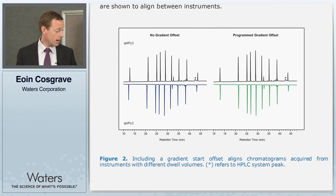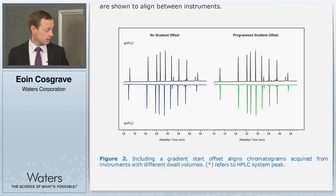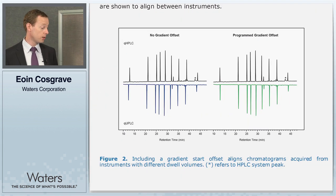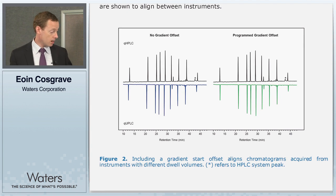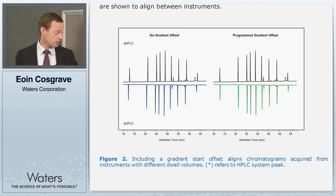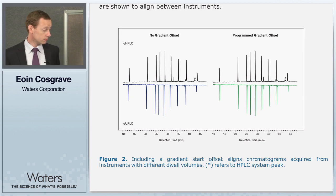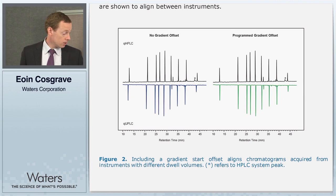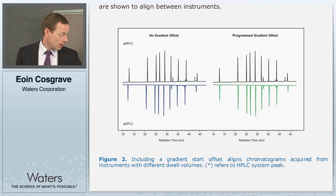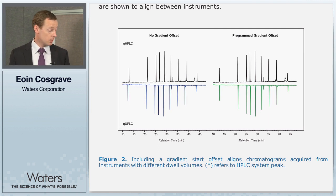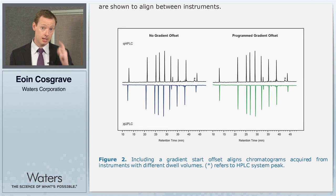When we put that into practice, the results presented in figure two show that in the absence of a gradient delay offset the chromatographic profiles are different. After we include the isocratic hold offset, the chromatograms align — and this is the effect that we would like to see with more complicated profiles.